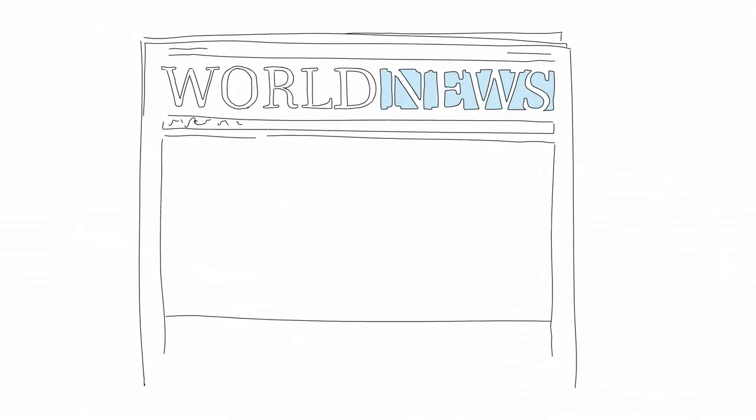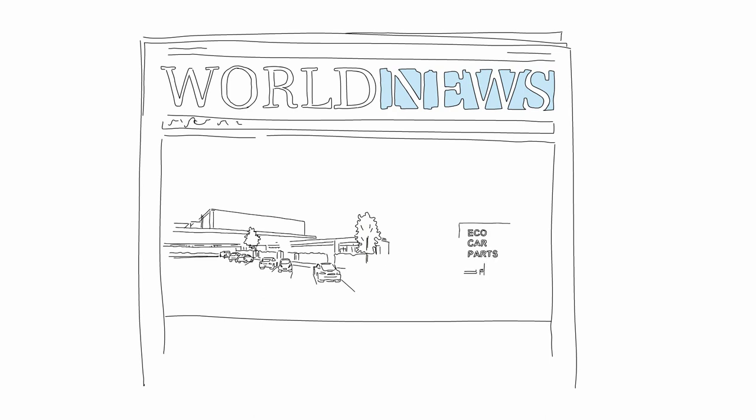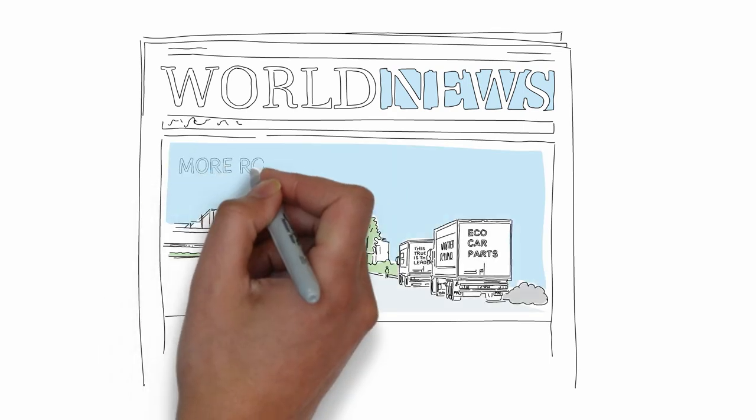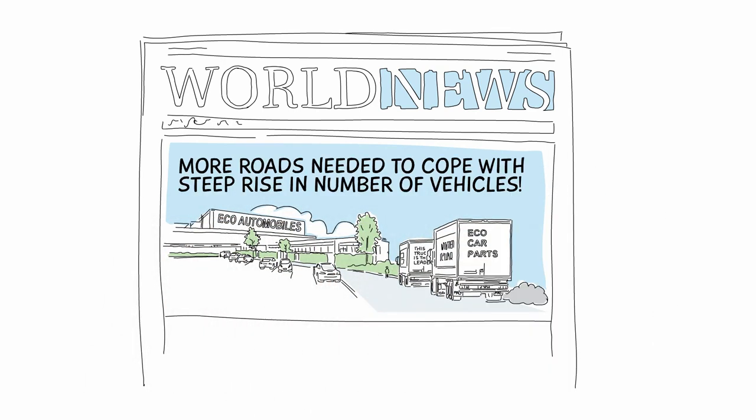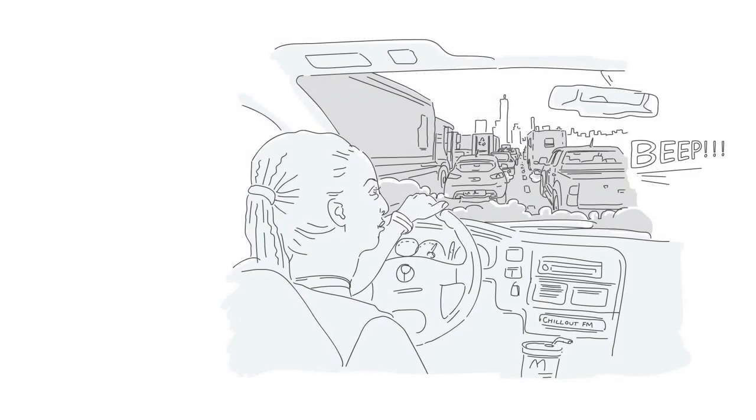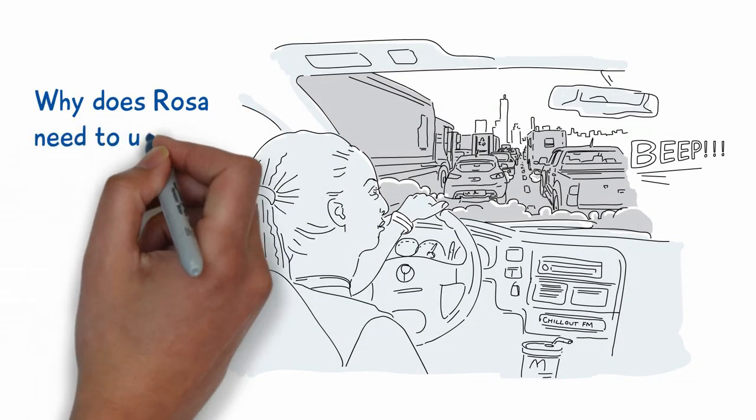But, and she knows it, this isn't enough. Cars remain a very resource intensive and inefficient way to deliver what is needed. Being transformative means thinking much wider. Why does Rosa need to use a car anyway?